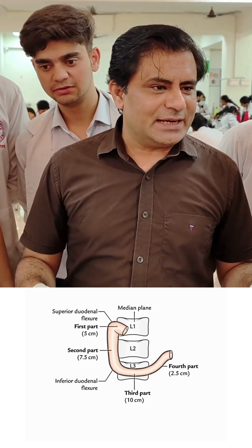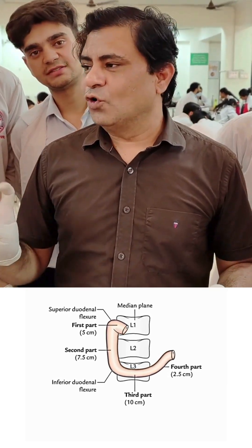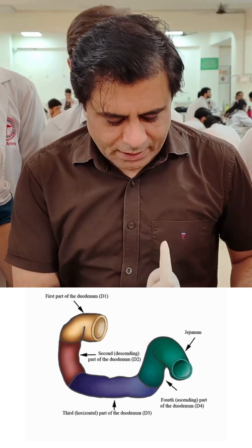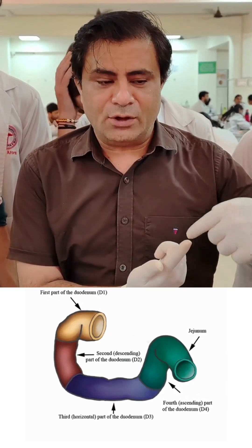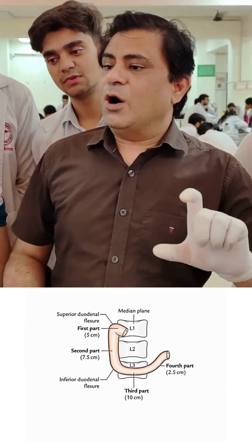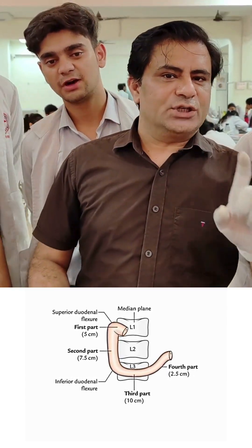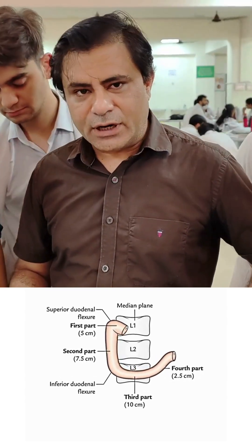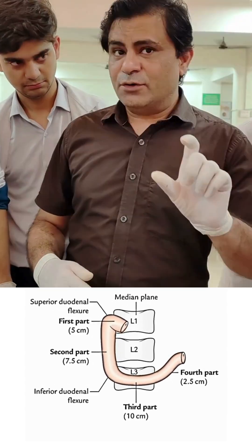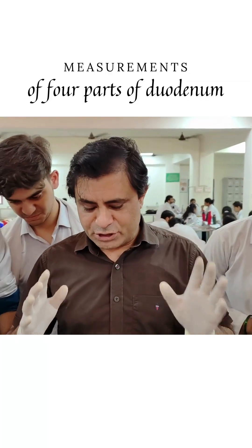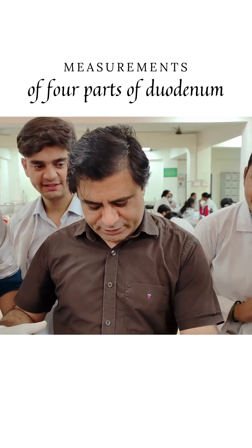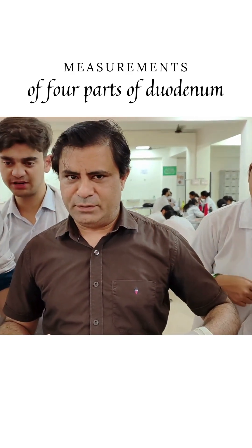The fourth portion ascends upwards and forwards — this is important because the duodenal loops continue in front. It is the smallest portion at about 2.5 cm, running from opposite L3 up to the lower portion of L2. So to summarize the measurements for MCQs: first part 5 cm, second part 7.5 cm, third part 10 cm, fourth part 2.5 cm. Very easy to remember.